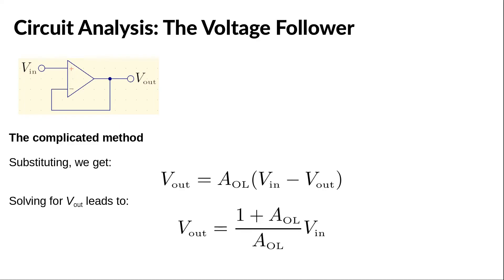but remember that the open-loop gain is assumed to be infinite, so the fraction reduces to 1, which leads us to the final result.